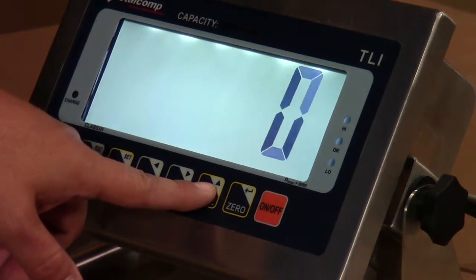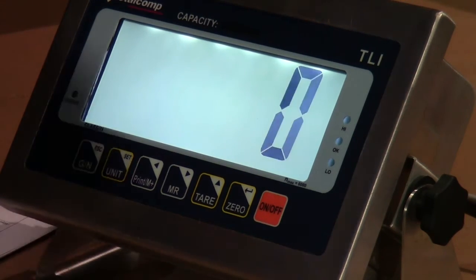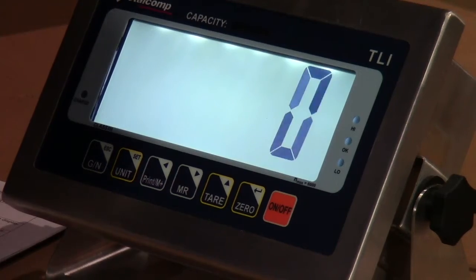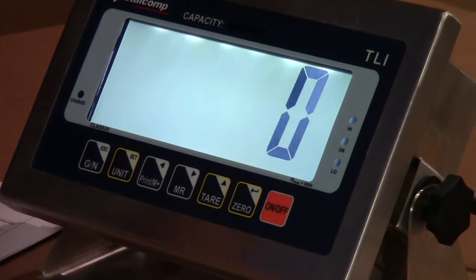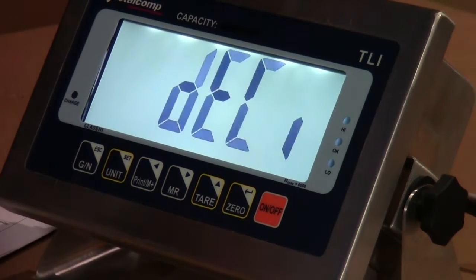Now, we don't want any decimal points at this point because we're going to calibrate with 1 pound resolution. So we leave it at zero. We hit the zero button, which is the enter button, and we arrive at decimal.